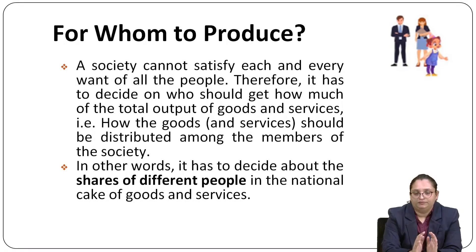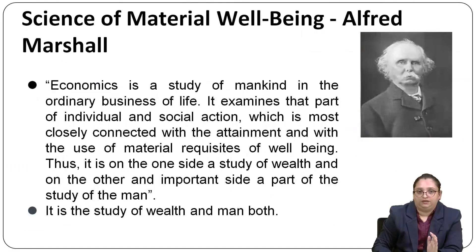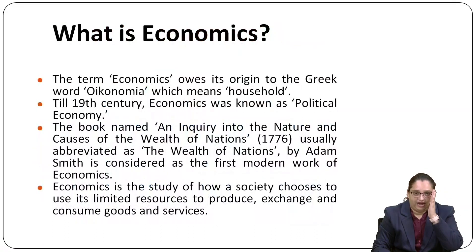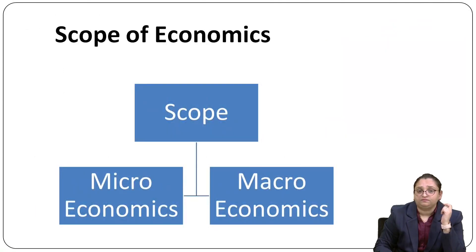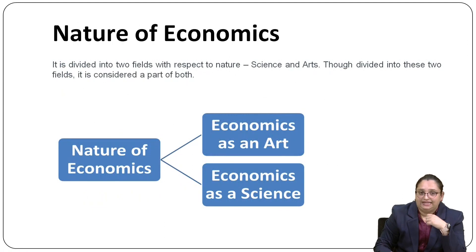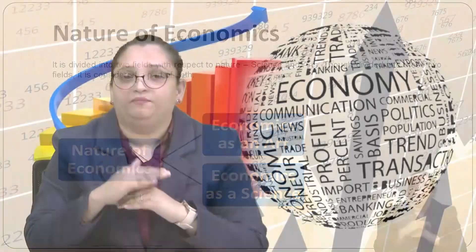To summarize this unit: we discussed the meaning of economics, the four definitions — science of wealth, science of material well-being, science of choice making, and science of dynamic growth and development — the scope of economics divided into microeconomics and macroeconomics, the nature of economics as both art and science, and the three basic economic problems: what to produce, how to produce, and for whom to produce. Thank you all for joining.